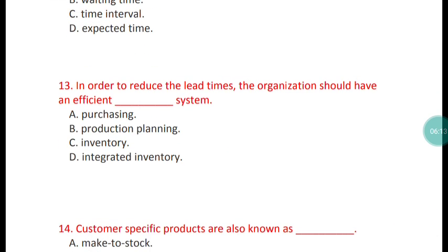Question 13: In order to reduce lead times, the organization should have an efficient what type of system? The correct answer is option D — an integrated inventory system. Organizations should have an efficient integrated inventory system to reduce lead times.